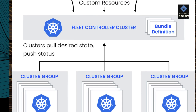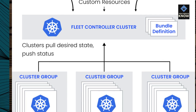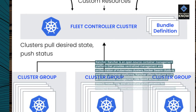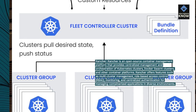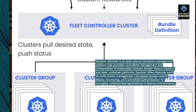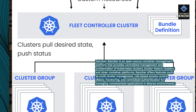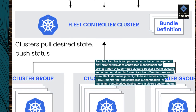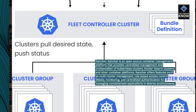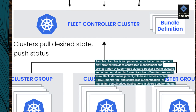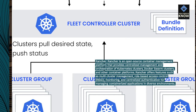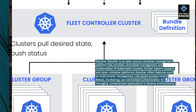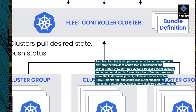Rancher. Rancher is an open-source container management platform that provides centralized management and orchestration of Kubernetes clusters, Docker Swarm clusters, and other container platforms. Rancher offers features such as multi-cluster management, role-based access control (RBAC), monitoring, and centralized authentication for managing containerized applications in diverse environments.